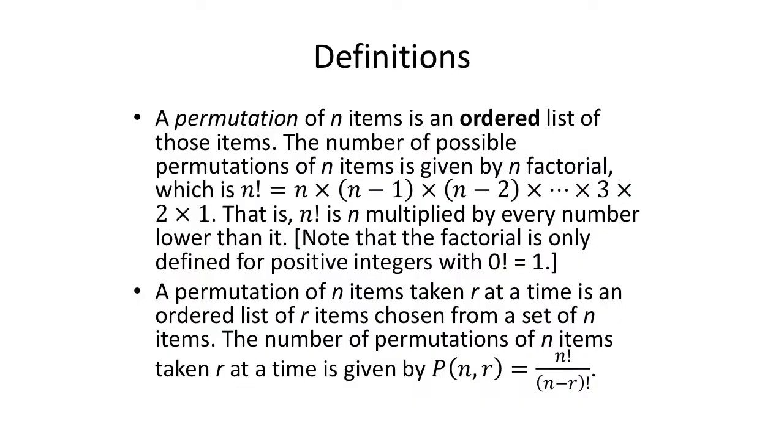Let's start with some definitions. A permutation of n items is an ordered list. Notice that's bold. Bold for a reason. Order matters. Ordered list of those items. The number of possible permutations of n items is given by n factorial. Factorial is an exclamation mark. It doesn't mean shout n, which I love to do in front of my students, but I won't do it here. n factorial, so n exclamation mark, is n multiplied by every number lower than it all the way down to 1.